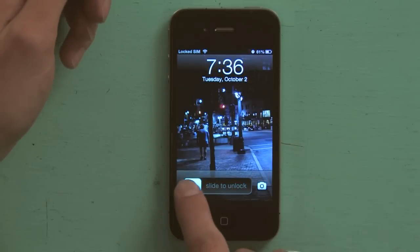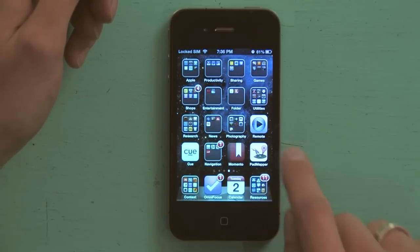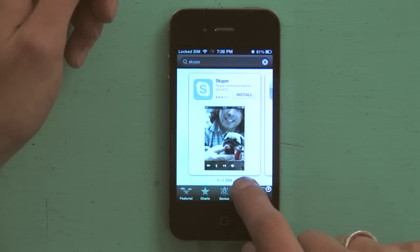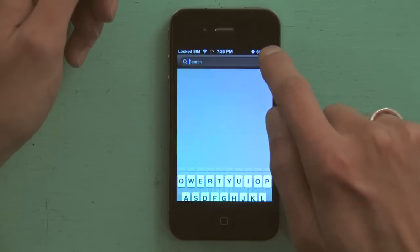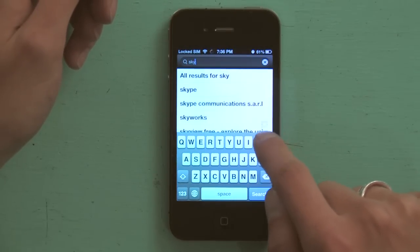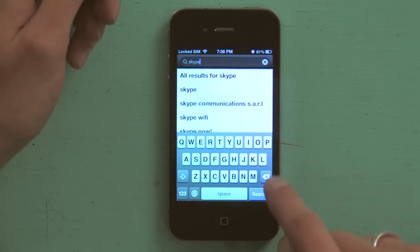Press your home button and slide to unlock. Tap on App Store, and then tap Search. Up at the top, type in S-K-Y-P-E, and then in the lower right, tap Search.